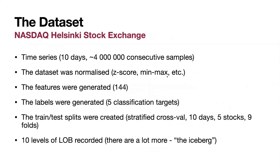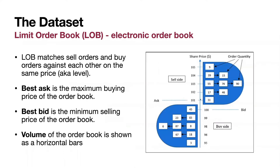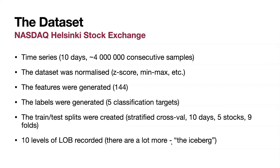The good news is that the features were already generated, and there are also labels for five classification targets. These labels will be used for supervised algorithms. RL doesn't need them because RL works directly with the data. The data also contains train/test splits. The splitting was performed in a certified cross-validation formulated in a walk-forward manner. There are five stocks traded, and all datasets for all days and stocks were already split into nine folds each.